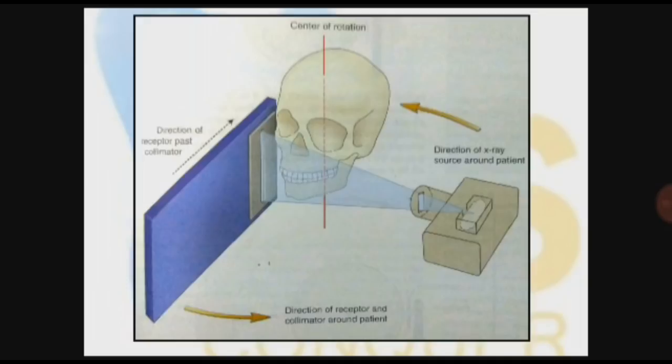In orthopantomography, as we can see in the image on the right side, there is a tube head that is the x-ray source. On the left side of the patient there is a receptor with secondary collimator. The blue part, the entire thing, is the receptor with a localized collimator, that is the gray part.